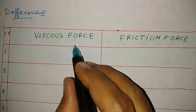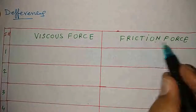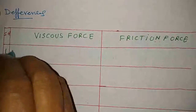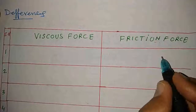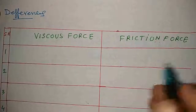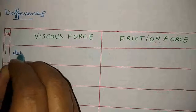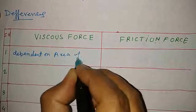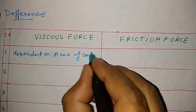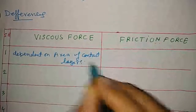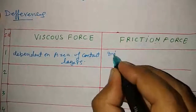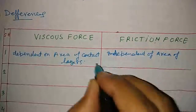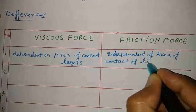Now let us see the differences between viscous force and frictional force. On one side is viscous force, and on the other side is frictional force. The first difference is that viscous force is dependent on the area of contact between the layers, whereas frictional force does not depend on the area of contact.